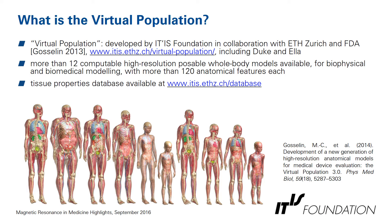Our study is heavily based on the virtual population, which is jointly developed by the ETH Foundation, in collaboration with ETH Zurich and FDA. It includes the famous anatomical models Duke and Ella, but contains altogether more than 12 computable high-resolution whole-body models available for biophysical and biomedical modelling. They have more than 120 anatomical features each, and there is a large tissue property database available online.